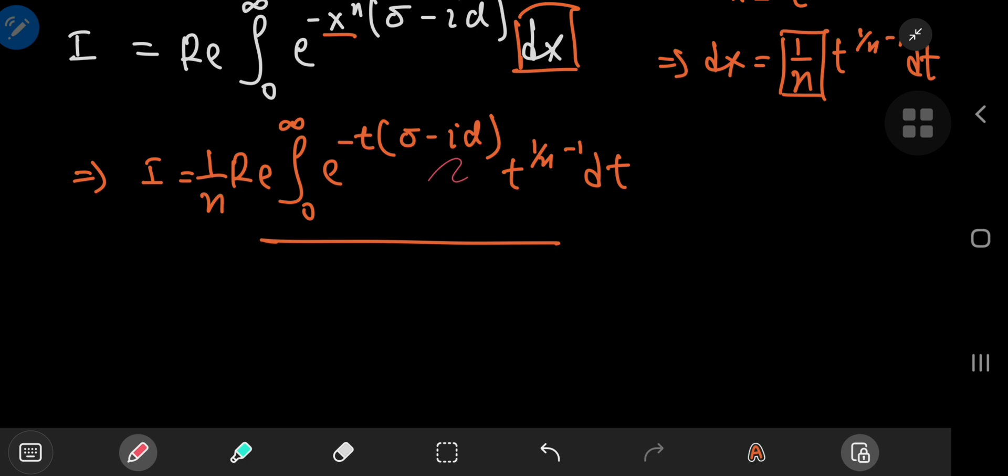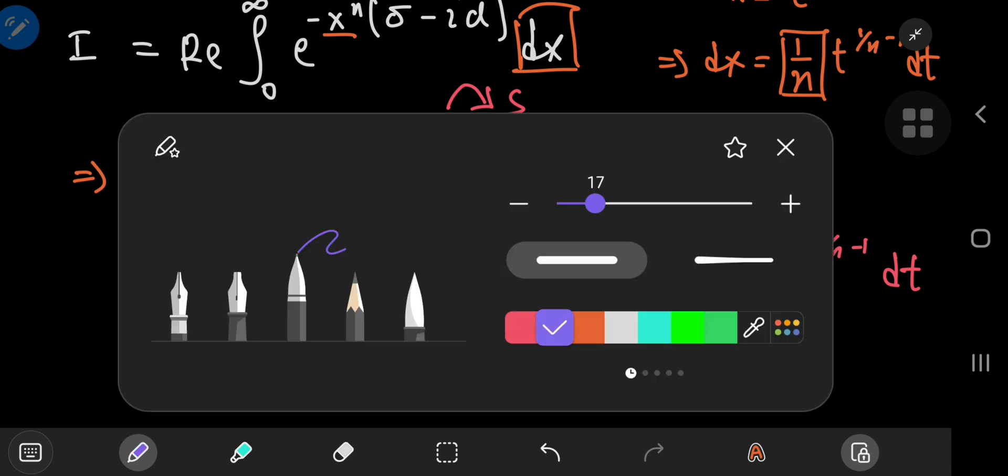So first off, notice that we have sigma minus i times alpha here, which is a complex number that I'm going to call s. So the integral you have has the structure of the integral from 0 to infinity of e to the negative st times t to the 1 by n minus 1 dt. And you may immediately think Laplace transform. And yes, that is correct.